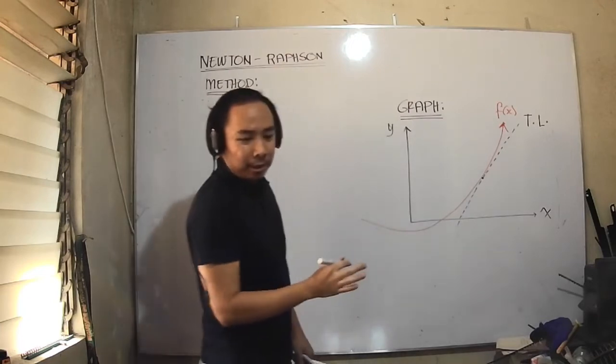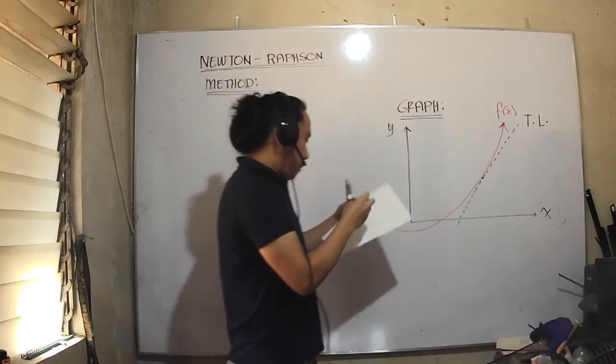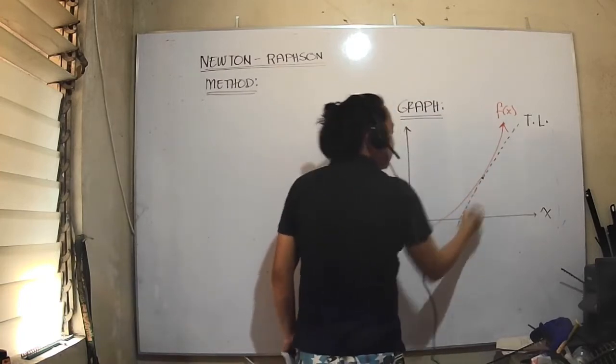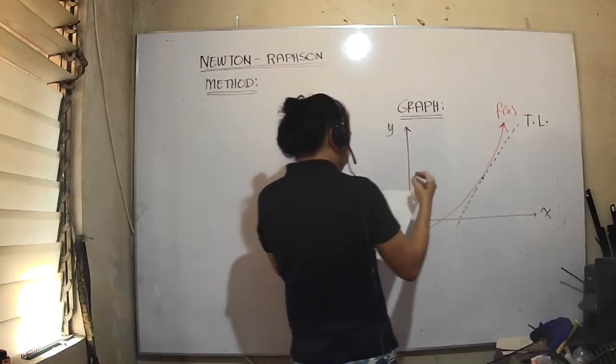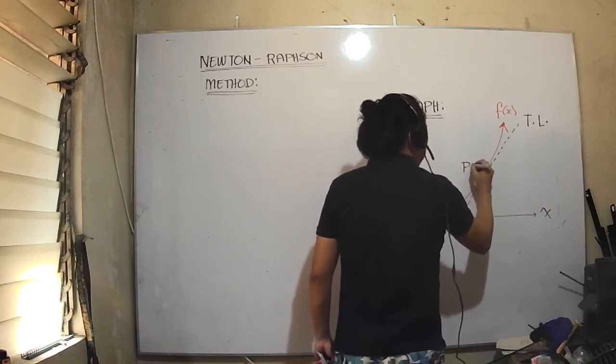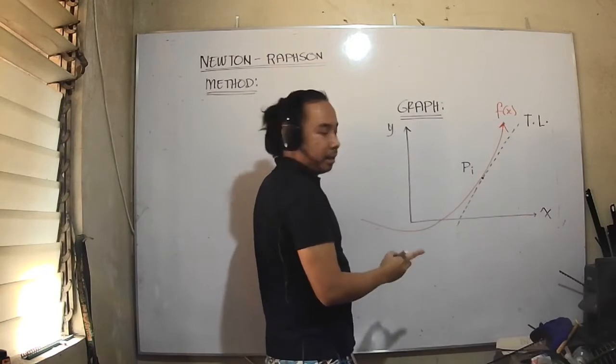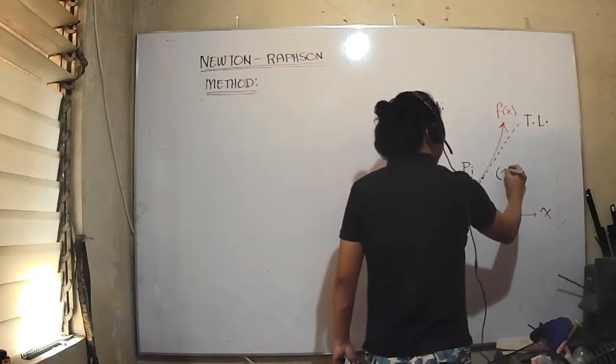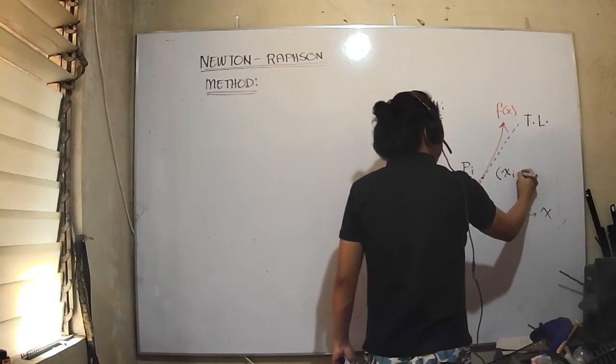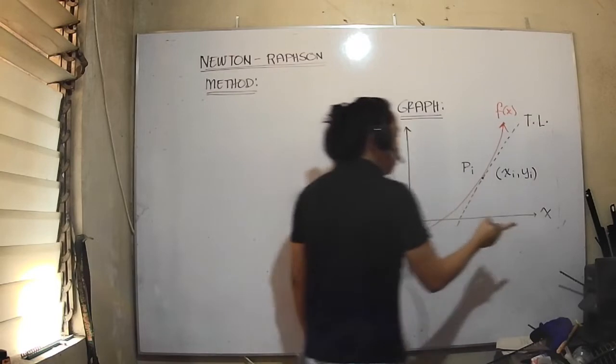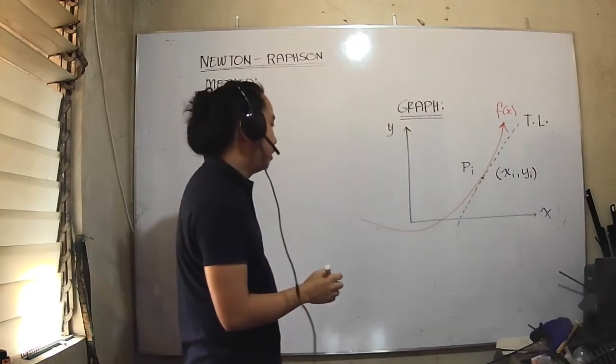When we're dealing with the tangent line, it's tangent to the curve at that point. I'll just call this point Pi. Point Pi has coordinates xi and yi.